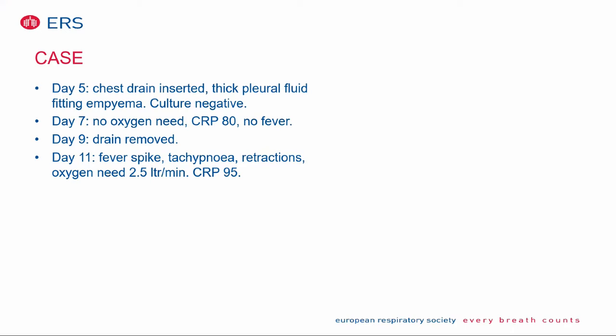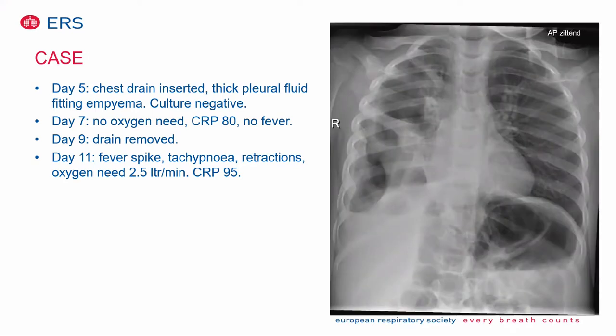To come back to our case: on day five, a chest drain was inserted with thick purulent fluid coming out of the drain. Culture was negative and no fibrinolytics were given. On day seven the child improved — no oxygen need, CRP decreased, and no temperature. On day nine the drain was removed. However, unfortunately, at day 11 the child developed a fever spike again, tachypnea, retractions, and an oxygen need of two and a half liters per minute, with CRP increased to 95. This was the X-ray made at day 11.